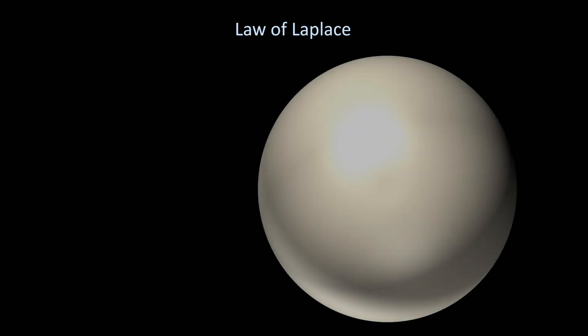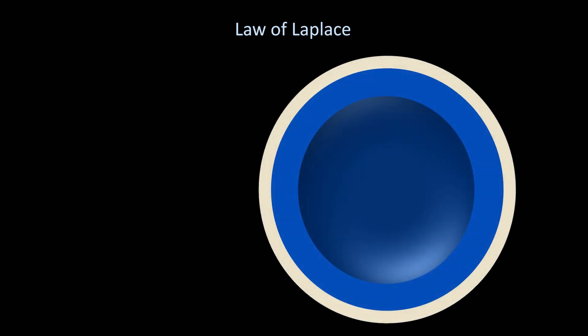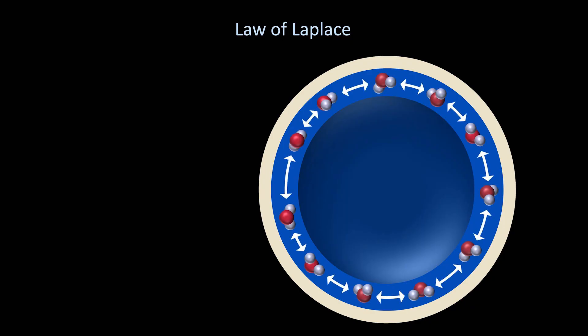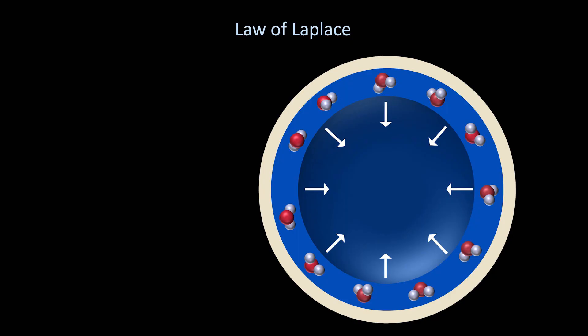To understand how surface tension relates to physiology, it's important to describe the law of Laplace. Imagine a hollow sphere made of some form of plastic, with a thin layer of water coating the inner surface. The layer of water is made up of individual water molecules, all of which are attracting each other. The net sum of the circumferential attraction is that the water is actually being pulled inward. If there was no enclosed gas, the water would contract down into a ball. However, if there is enclosed gas, the result is an increase in the pressure of that gas. The surface tension pulls the water inward until an equilibrium is reached with the pressure pushing outward.